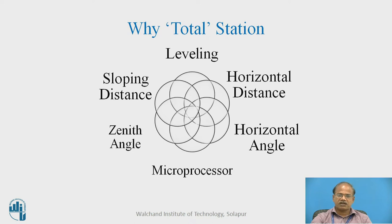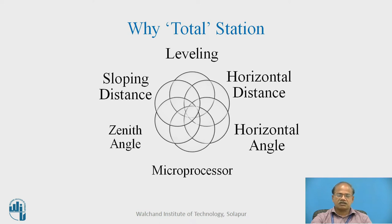The primary aim of leveling is to establish vertical control. There are distance measuring instruments ranging from chains and tapes, and nowadays electromagnetic distance measuring instruments are also available. Most often we are interested in measuring horizontal distance, but except for EDM, the rest of the instruments are not capable of measuring sloping distance.